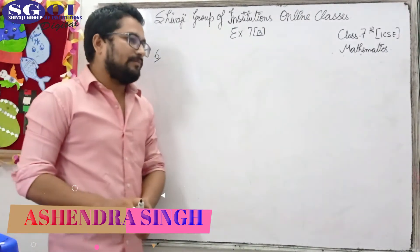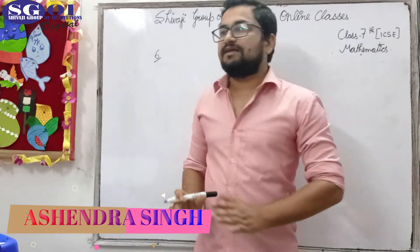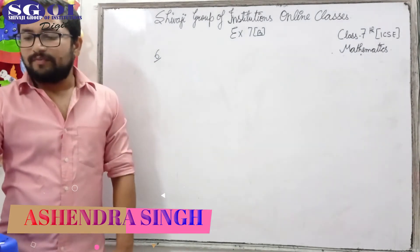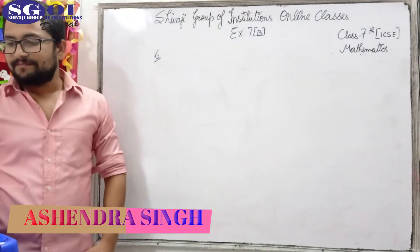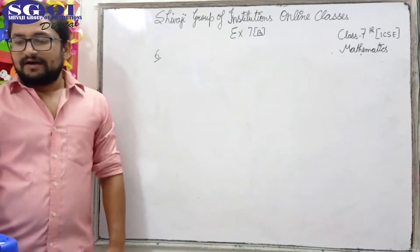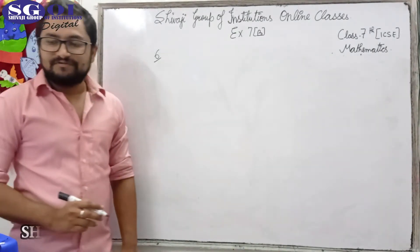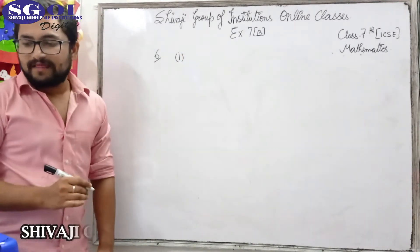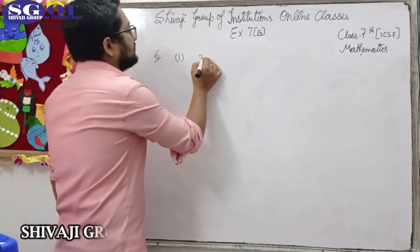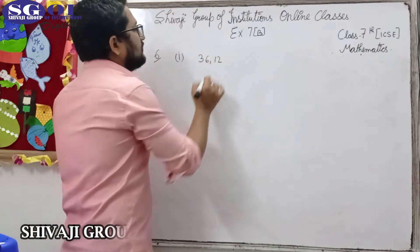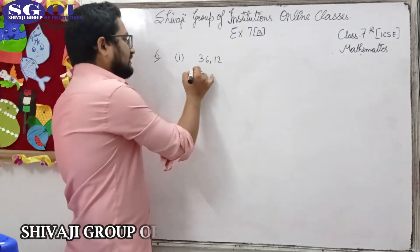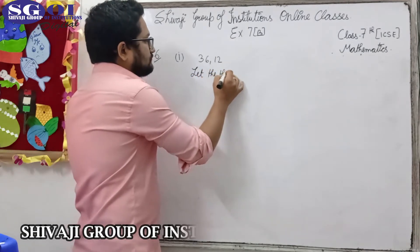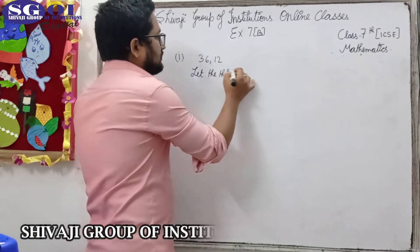Question number six says: find the third proportion. I will be covering part number one and part number five. Part number one says: find the third proportion to 36 and 12.